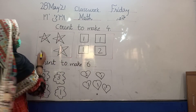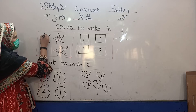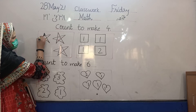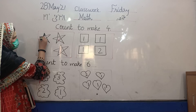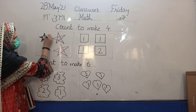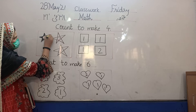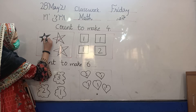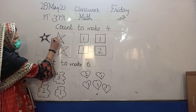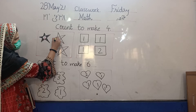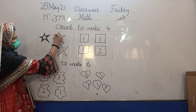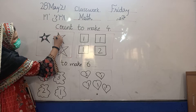Okay, now color this one star. Color the star. 1 plus 2 is equal to 4. Color the 2 stars. 2 plus 2 is equal to 4.